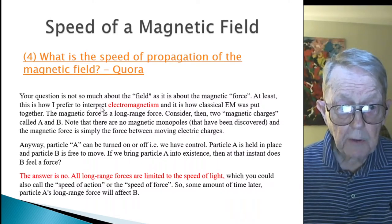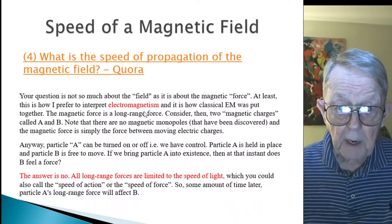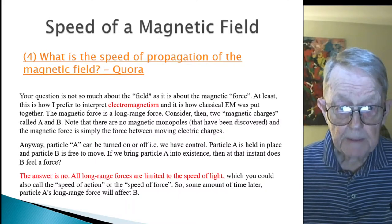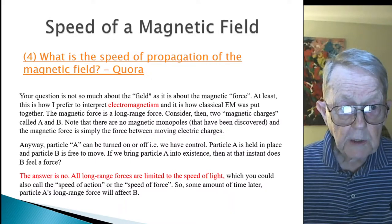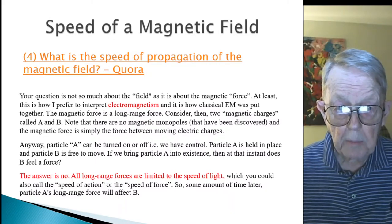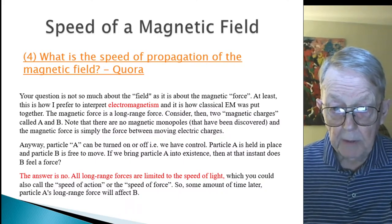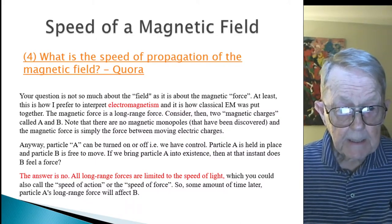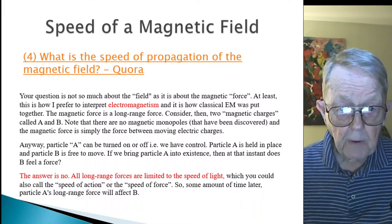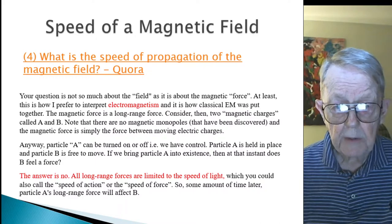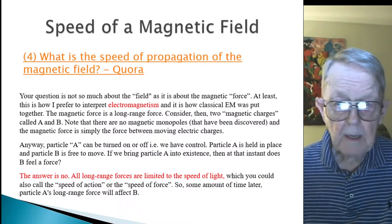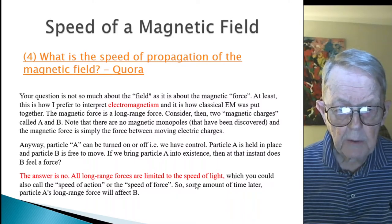At least this is how I prefer to interpret electromagnetism, and it's how classical EM was put together. The magnetic force is a long-range force. Consider then two magnetic charges called A and B. Note that there are no magnetic monopoles that have been discovered, and magnetic force is simply the force between two moving electric charges. Anyway, particle A can be turned on and off, and we have control. Particle A is held in place, particle B is free to move, and if we bring particle A into existence, then at that instant, does B feel a force? The answer is no.